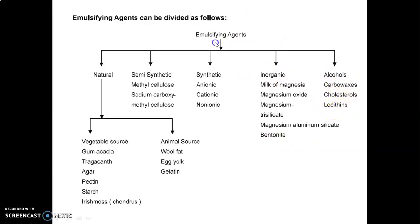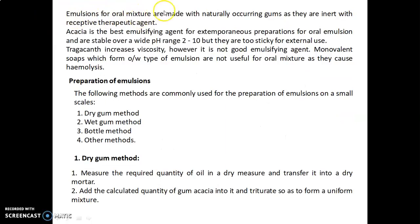Emulsions for oral mixture are made with naturally occurring gums as they are inert with the respective therapeutic agent. Acacia is the best emulsifying agent for extemporaneous preparation for oral emulsion and is stable over a wide pH range of 2 to 10, but too sticky for external use. Tragacanth increases viscosity but is not a good emulsifying agent. Monovalent soaps form O/W type emulsions but are not useful for oral mixtures as they cause hemolysis.